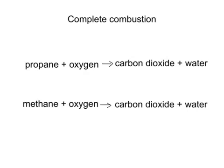In complete combustion, the products are always carbon dioxide and water. So here propane plus oxygen gives carbon dioxide plus water. If asked to give the symbol equation for this, you would likely be given the formula for propane, which is C3H8. You are expected to know the formula for oxygen, which is O2, the formula for carbon dioxide, which is CO2, and for water, which is H2O. You also need to be able to balance this equation, which means having the same number of each type of atom on each side.